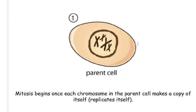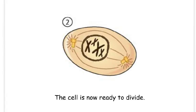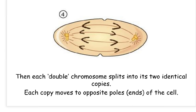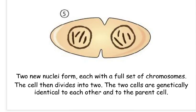Mitosis begins once the DNA in the nucleus of the cell has been replicated. As soon as the chromosomes have been replicated, spindles form within the cell that the doubled-up chromosomes attach to. These doubled-up chromosomes then line up along the centre of the cell. Each double chromosome is then pulled into two identical copies, and one copy goes to each pole of the cell. Once each half of the cell has a complete set of chromosomes, two new nuclei form containing those chromosomes, and finally the cell splits into two, forming two identical daughter cells.